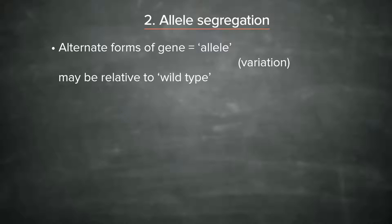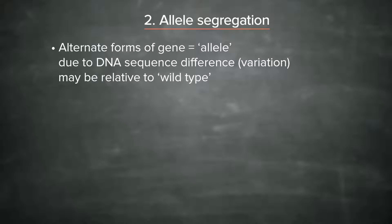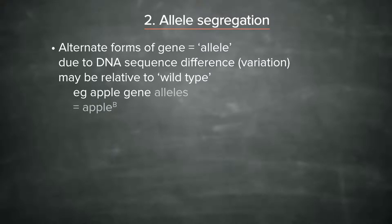An allele is due to DNA sequence variations or differences. We may not know them all the time, but we can designate how a gene's alleles look by a kind of notation. For example, let's designate the apple gene. It might have alleles apple big B — and maybe that gives you a green apple — or apple little b, and maybe that gives you a yellow apple.